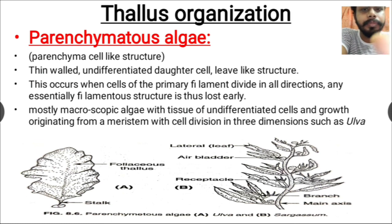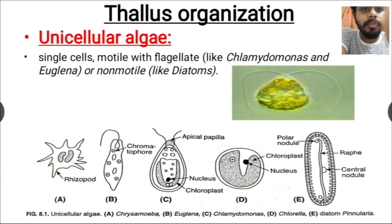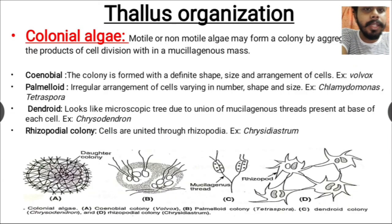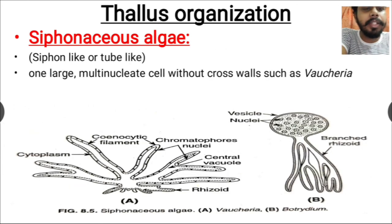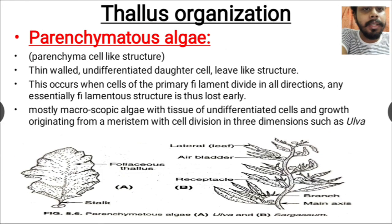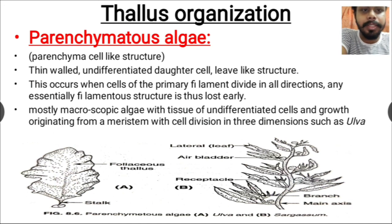So these are all about the thallus organization of algae: first, unicellular algae; next, colonial algae; then filamentous algae, which make a filament-like structure; siphonaceous algae with a tube-like structure; and parenchymatous algae, which are also filamentous but grow in three dimensions in all directions, ultimately forming a leaf-like structure. Thank you for watching this video.